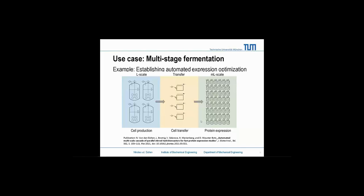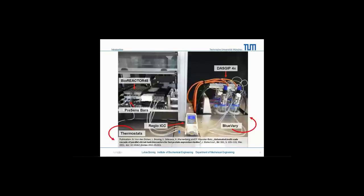Our use case is a multi-stage fermentation: we produce lots of cells in a larger-scale bioreactor in the DASK system, then transfer those cells into the Bioreactor 48. The fermentation broth is pumped into containers on the deck, the liquid station distributes volume into all the smaller reactors, and once in the small reactors we start our actual research testing parameters. All these devices need to be connected — our goal was to create one workflow that you hit and then forget, since the process takes a week and we don't want to interfere with it.